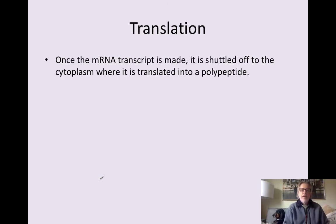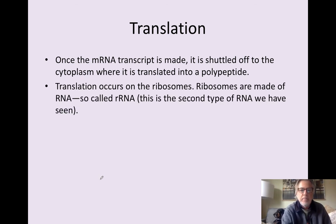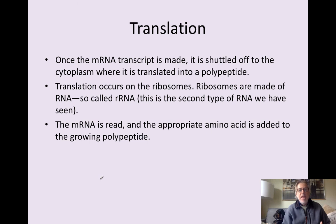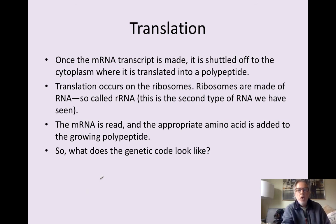Once the mRNA transcript is made and edited, it is shuttled off to the cytoplasm, where it is translated into a polypeptide. Translation occurs on the ribosomes. Ribosomes are made of RNA, the so-called rRNA or the ribosomal RNA. This is the second type of RNA we have seen now. And the mRNA is read and the appropriate amino acid is added to the growing polypeptide chain. So, that is an overview of transcription and translation.